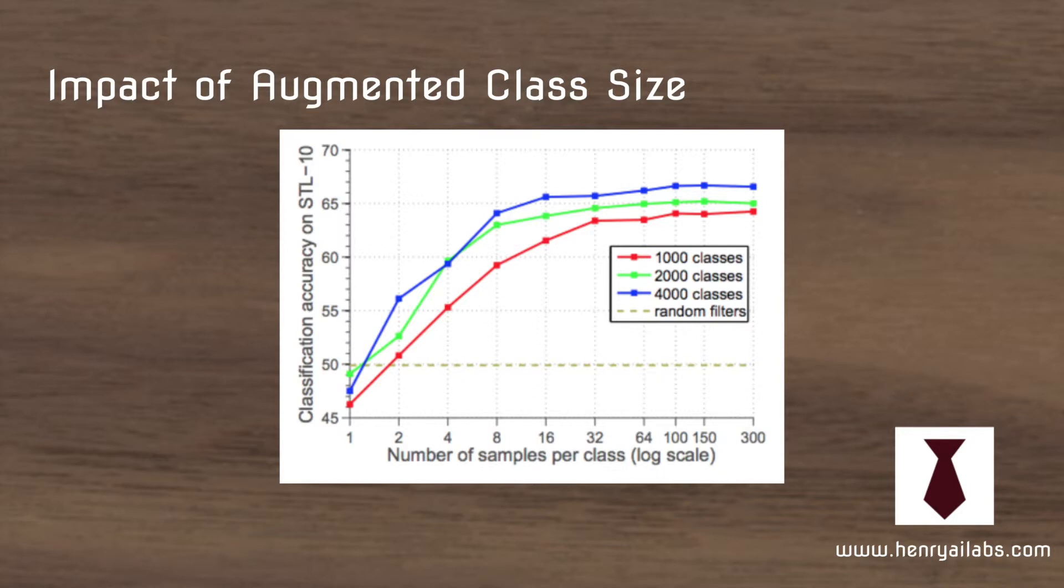Each class again is an augmentation. So it might be like 45-degree rotation plus add 20 to the red color channel. And that's one class. And you have 4,000 of these classes and you have about 16 augmented images in each class.